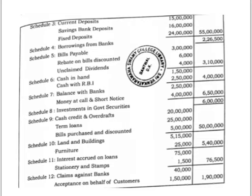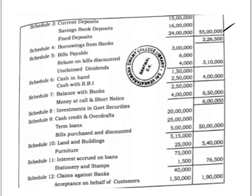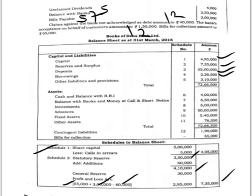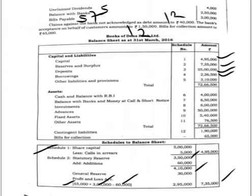Note number 3, deposits: current deposits 15 lakh, savings bank deposits 16 lakh, fixed deposits 24 lakh — total deposits 55 lakh, written in the balance sheet. Note number 4, borrowings: borrowings from the bank 2,26,500, shown as is. Note number 5, other liabilities and provisions: bills payable 3 lakh, rebate on bills discounted 6,000, unclaimed dividends 4,000 — total 3,10,000. Adding notes 1 to 5 gives total capital and liabilities of 72,66,500.